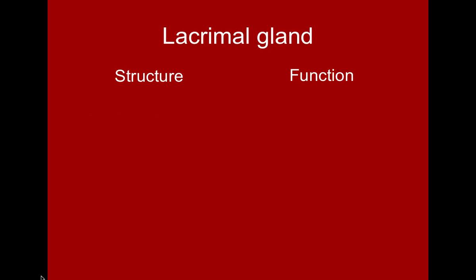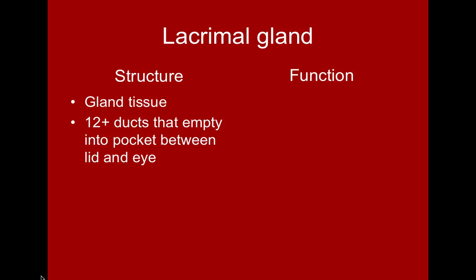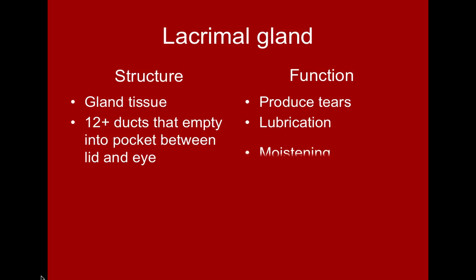The final accessory structure is the lacrimal gland. This is gland tissue with about a dozen ducts that empty into the pocket between the lid and the eye. They function to produce tears — located right above your eyebrow — and also lubricate and moisten the eye.